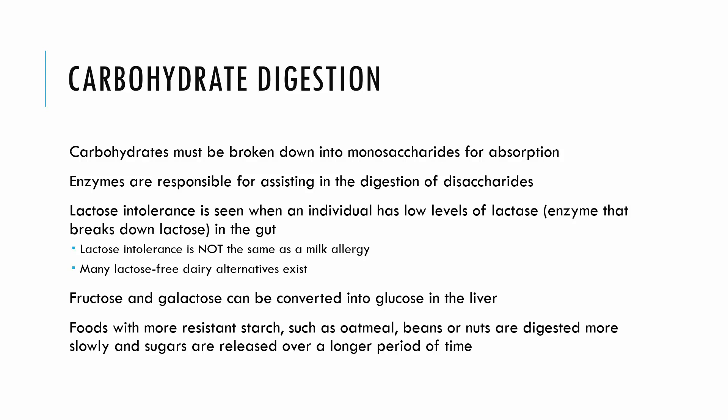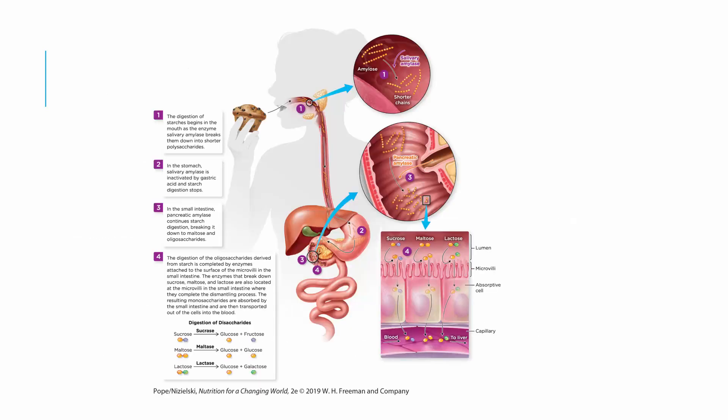We break carbohydrates down into glucose, fructose, and galactose. Glucose is the form that circulates in our blood, and fructose and galactose can be converted into glucose in our liver. Resistant starch — found in oatmeal, beans, and nuts — has more fiber and is digested more slowly, released over a longer period of time. It acts differently than other carbohydrates in how it affects our blood sugar. Carbohydrates are water soluble, so we can transport them in the capillary blood to the liver.